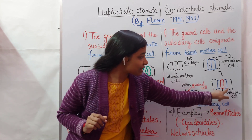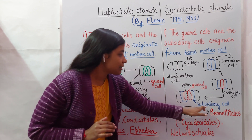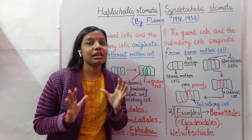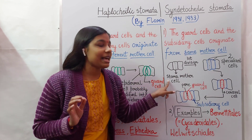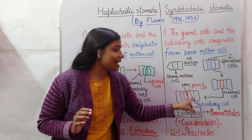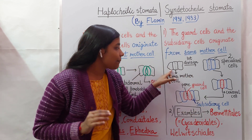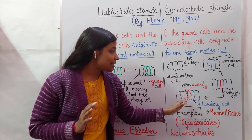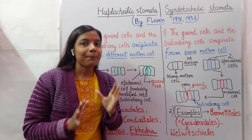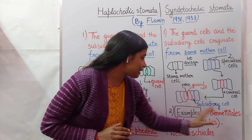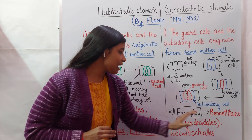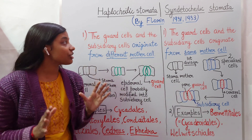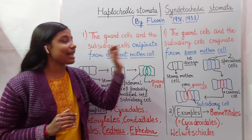The central cell, shown here, divides and gives rise to guard cells, while the two adjacent cells are modified into subsidiary cells. So in syndetochelic stomata, the stoma mother cell gives rise to both guard cells and subsidiary cells, because the same mother cell divides twice. Examples in this case are Bennettitales, also known as Cycadoidales, and Welwitschia.